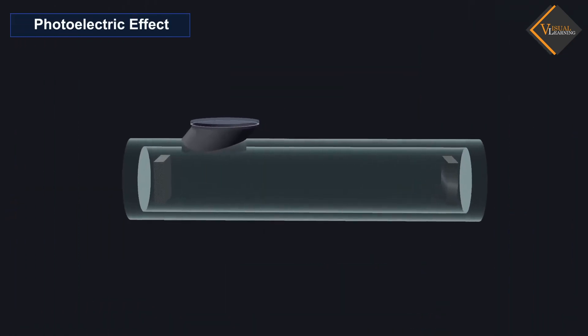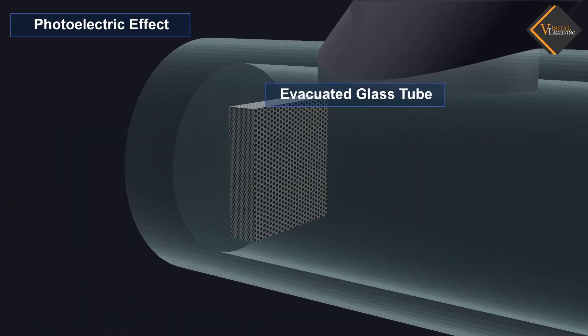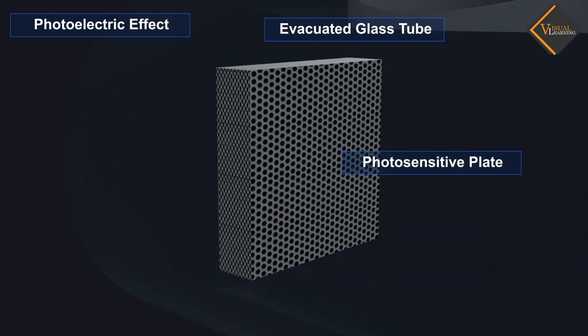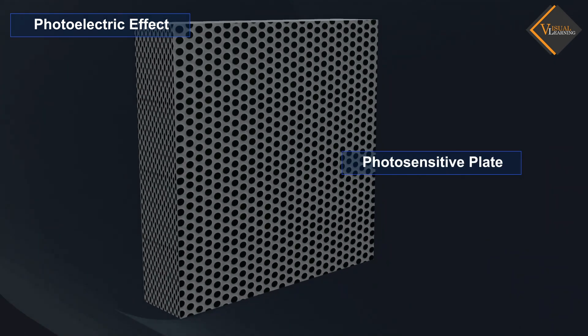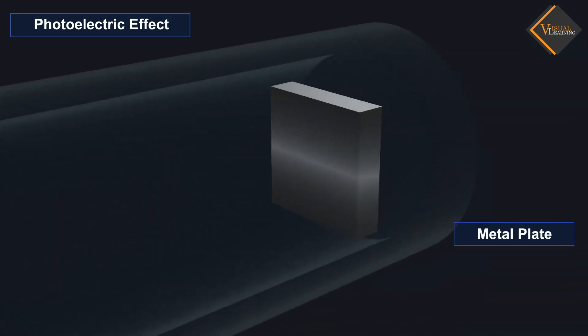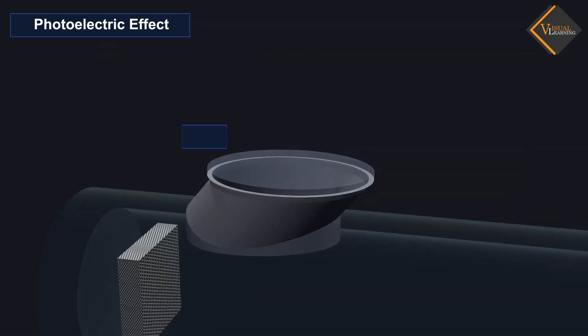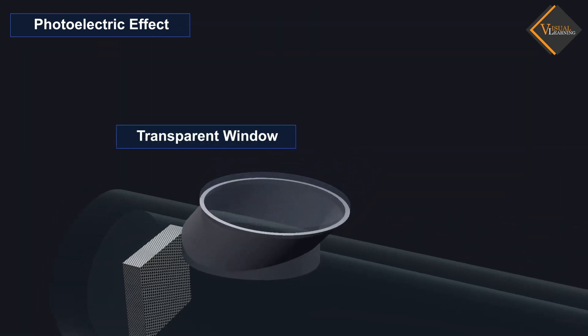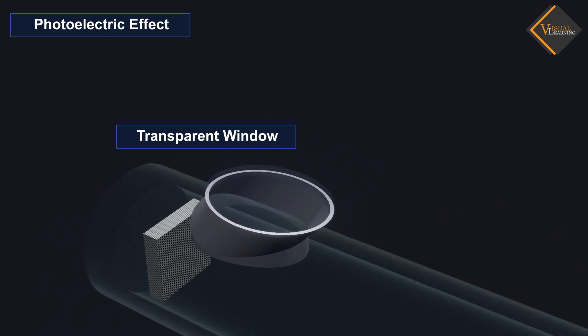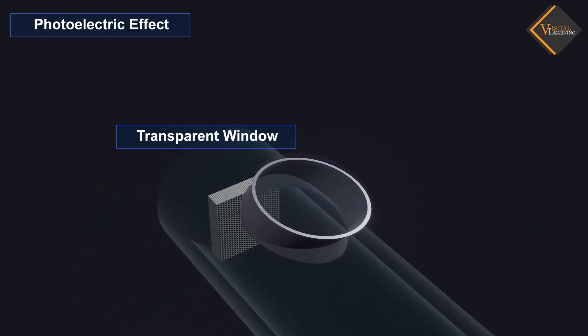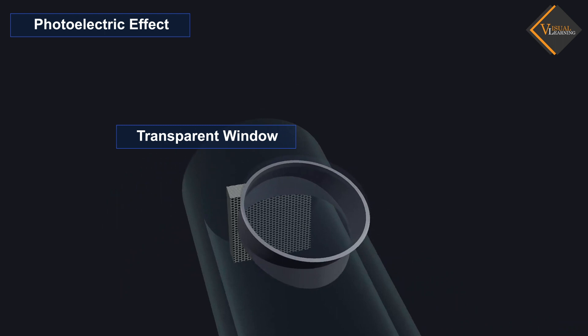In the animation, we see an evacuated glass tube with a photosensitive plate at one end and a metal plate at the other end. A transparent window is placed above the glass tube which filters the light and allows only a particular wavelength of light to pass through.